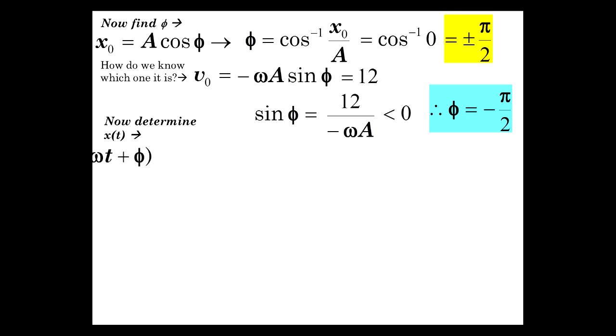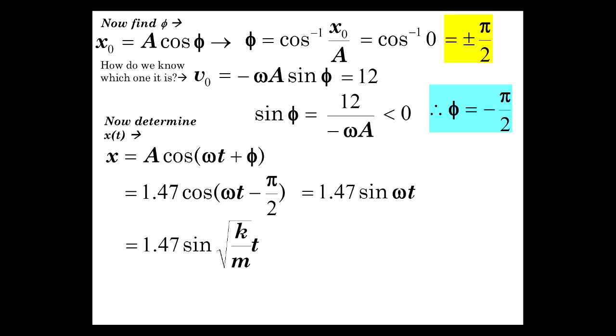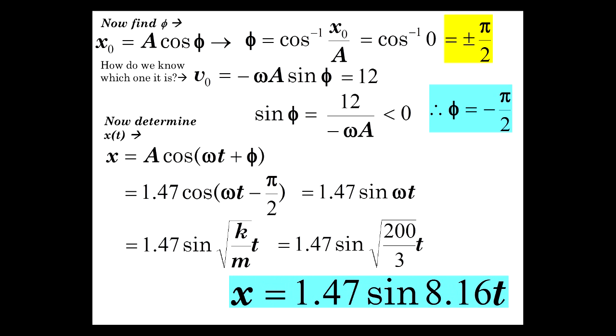And finally, we can get the full expression for x as a function of time, rewriting x as A cosine of omega t plus phi, but we've discovered some particulars. A is 1.47, and phi is minus pi over 2. This is also equivalent to 1.47 sine of omega t. The pi over 2 is like 90 degrees. So when we shift cosine by 90 degrees, we have sine or negative sine, depending on which way you're going. And now, omega squared of k over m. So we have the numbers here to plug in. k is 200, m is 3, and finally, x equals 1.47 sine of 8.16 t. And I hope you enjoyed that pretty powerful technique to find the position in this problem as a function of time.